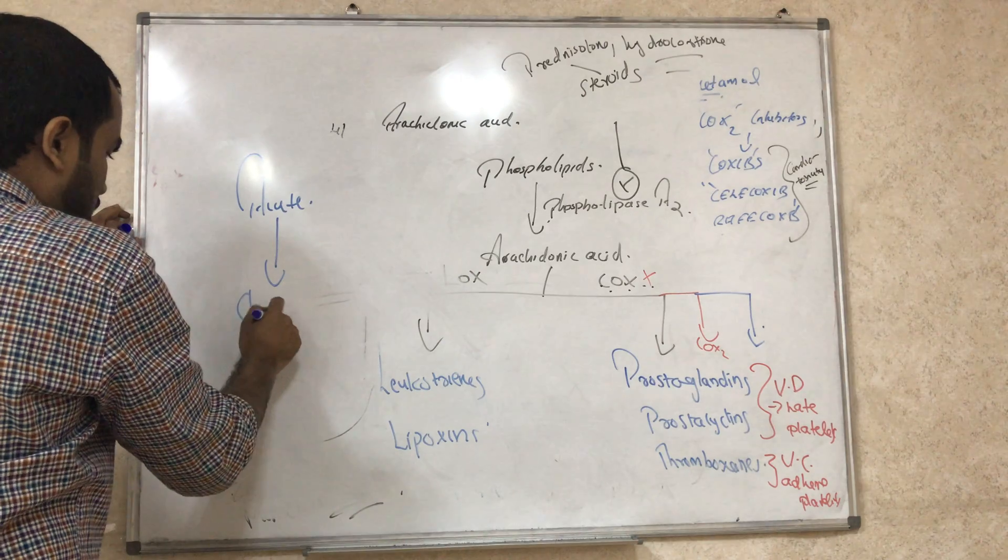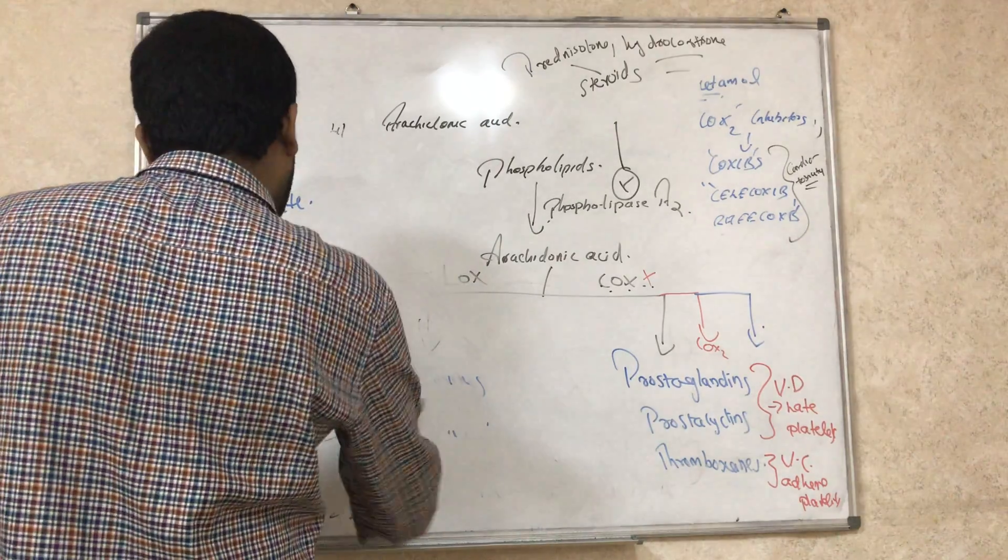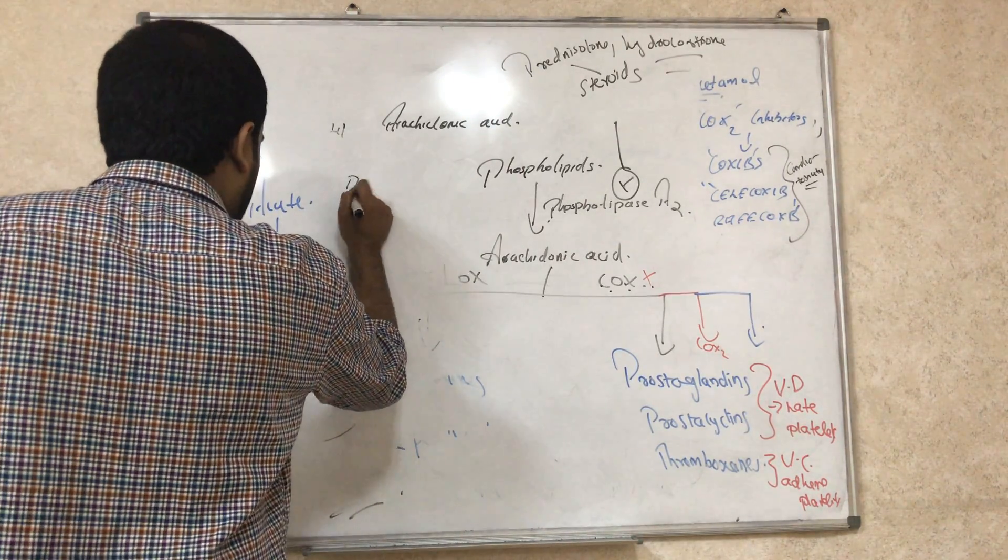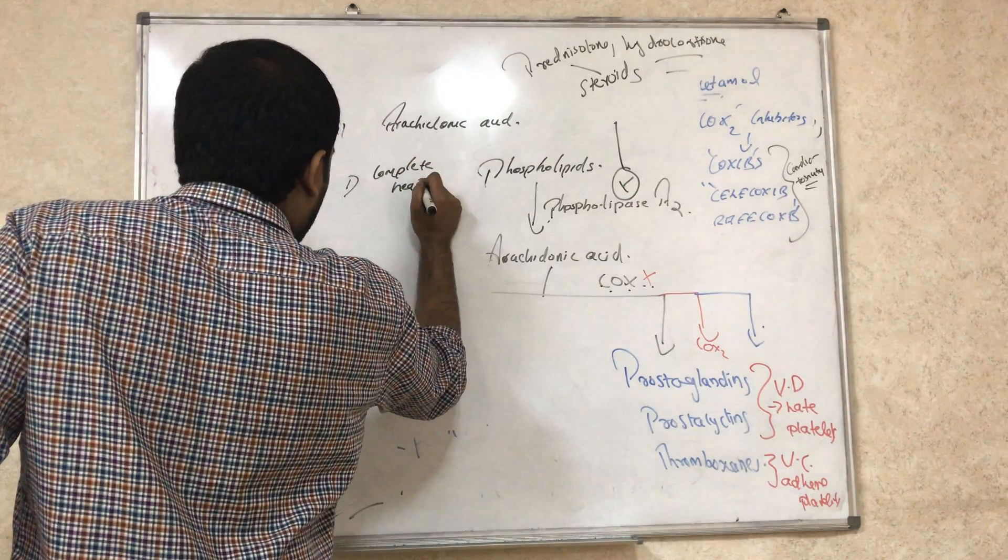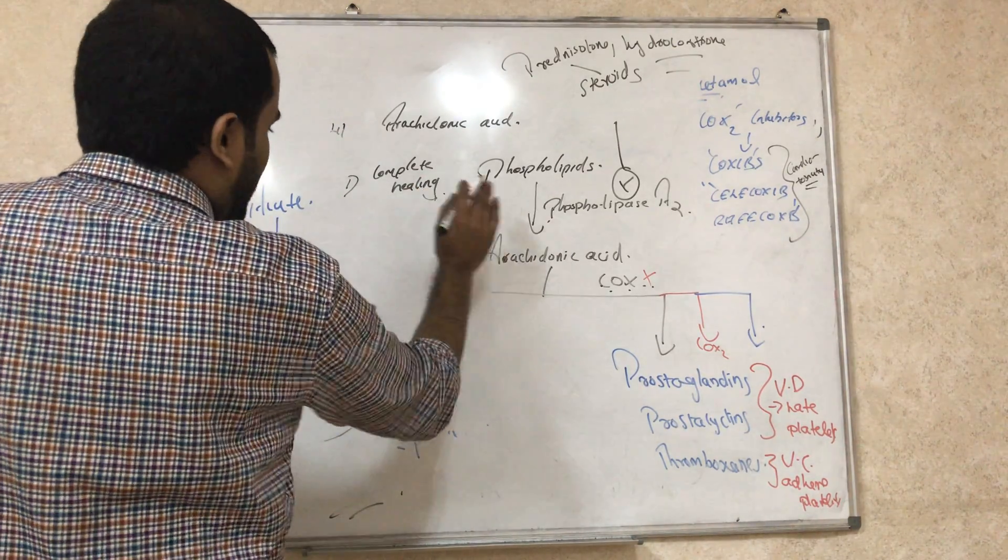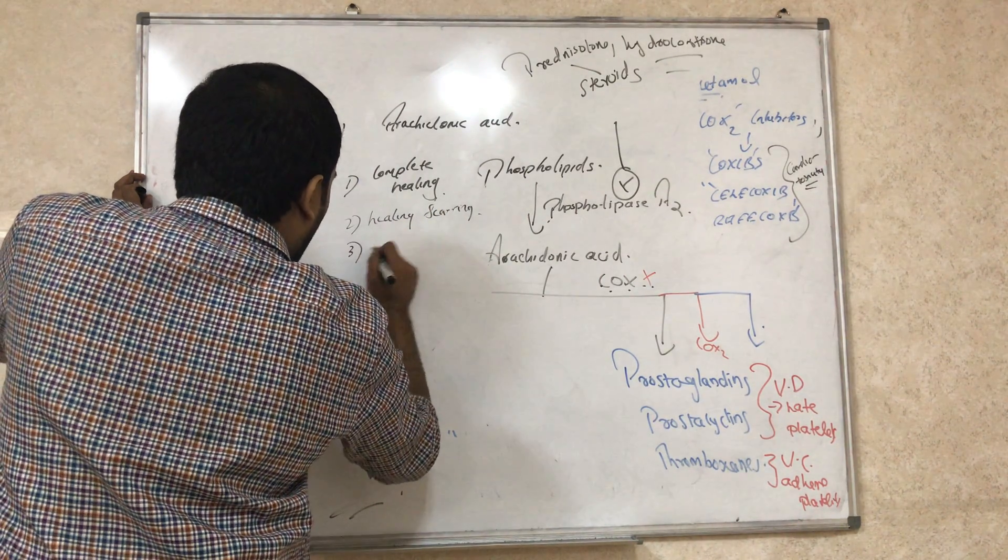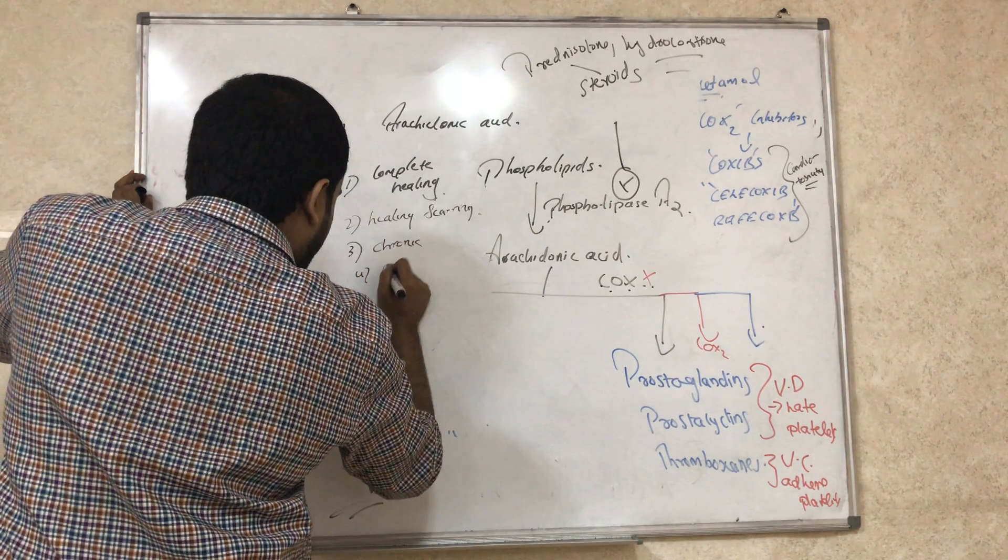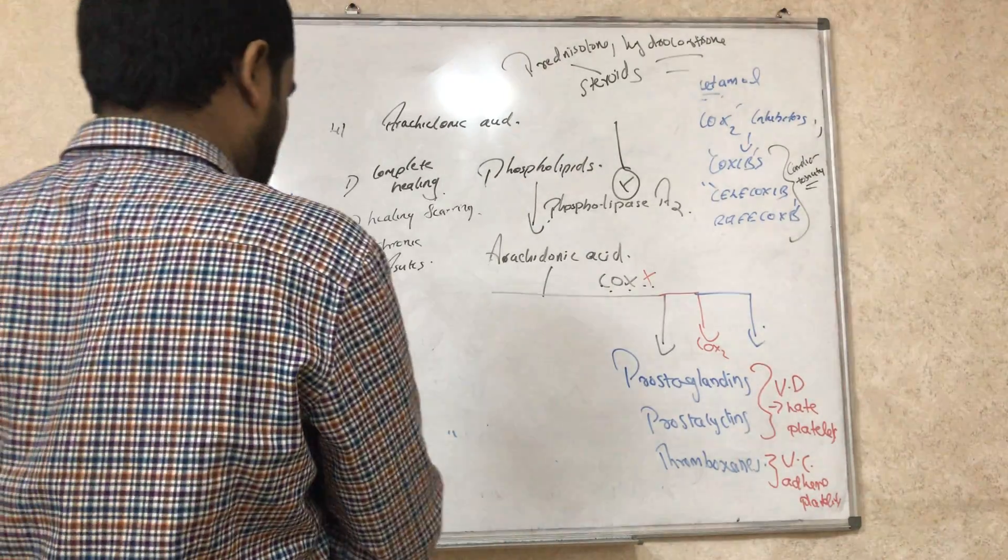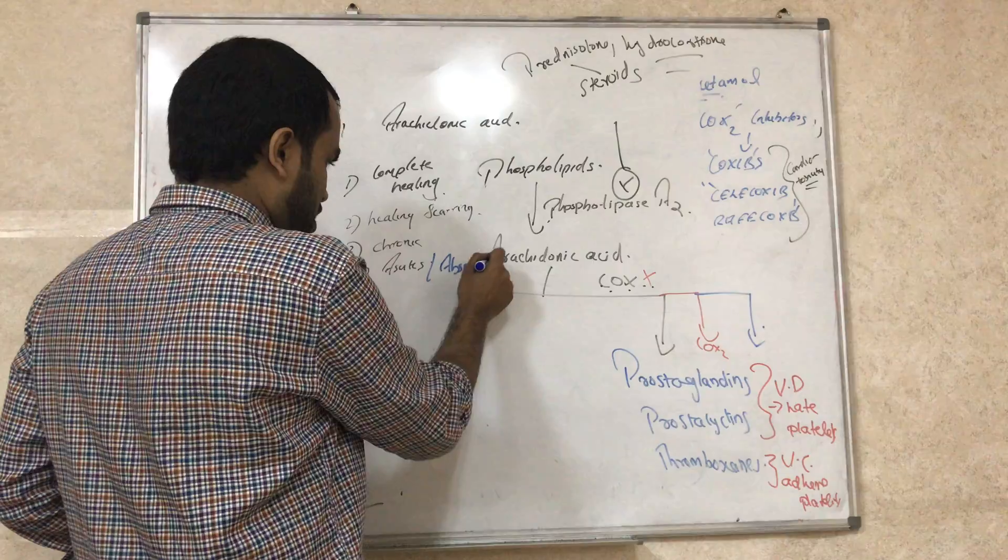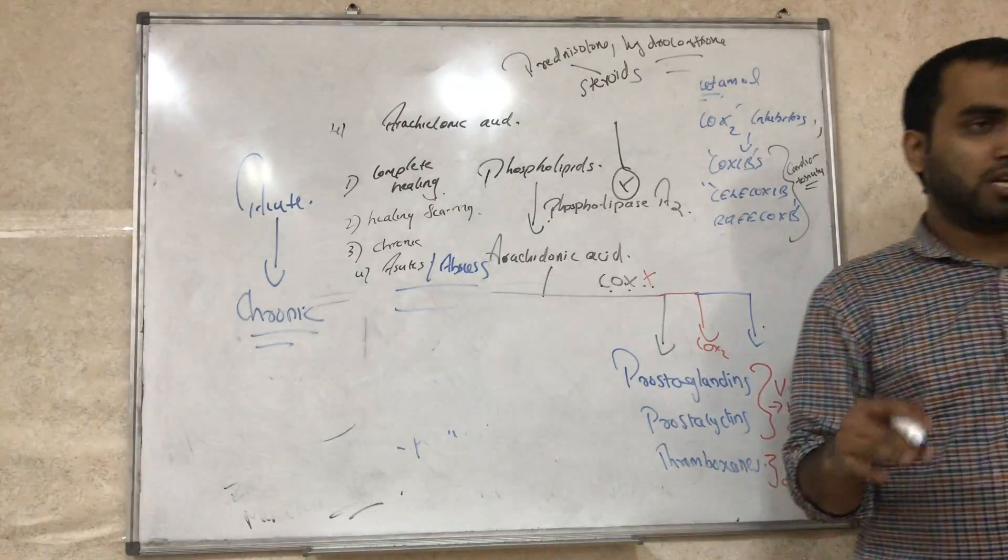Acute inflammation will become chronic in severe cases. Or if acute inflammation is left untreated, it can completely heal with full regeneration, or healing with scarring, or they will change to abscesses. These are complications of acute inflammation. Abscesses can occur where inflammation takes place, and they will turn into chronic. Now we will understand how acute inflammation is mediated, and now we will study chronic inflammation.